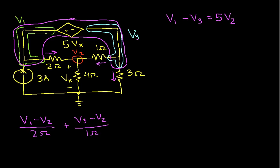We then have the current going through the 3 ohm resistor. That'll be V3 divided by 3 ohms. And this will be equal to the current coming into the node, which is this 3 amps.